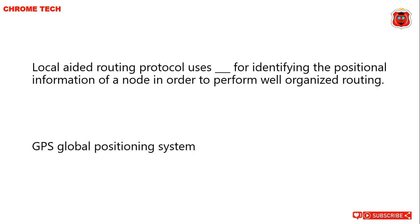Local Aided Routing protocol uses GPS for identifying the positional information of a node in order to perform well-organized routing. GPS — Global Positioning System is the answer.